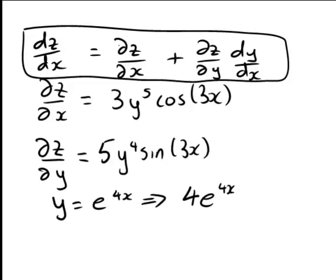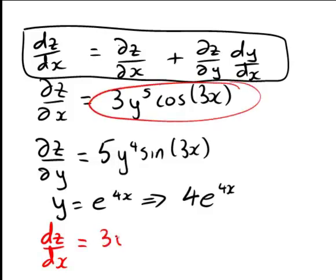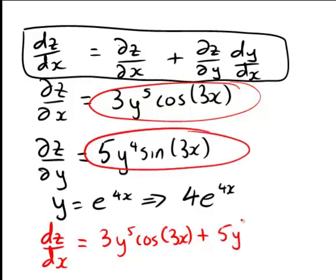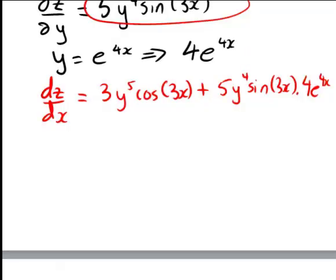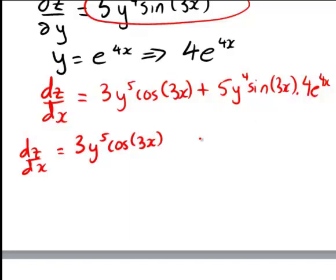We can now combine all of this information together to determine that dz/dx is equal to the partial derivative of z with respect to x, which we found was 3y to the 5 cos 3x, plus the partial derivative of z with respect to y, which was 5y to the 4 sine 3x, times dy/dx, which was 4e to the 4x. Tidying that up, we get 3y to the 5 cos 3x plus 20y to the 4 e to the 4x sine 3x.